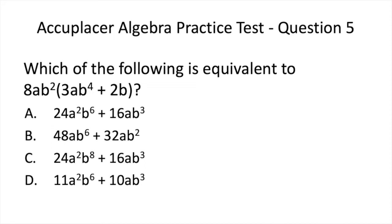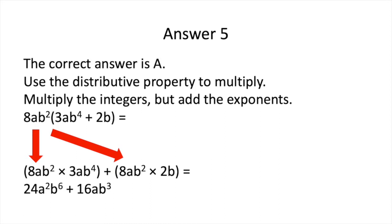Here is Question 5. Now pause to solve. The correct answer is A. Using the distributive property of multiplication, multiply the terms as shown below. When multiplying each of the two terms, you need to remember to multiply the integers but add the exponents. So for example, 8 times 3 is 24, and B to the power of 2 times B to the power of 4 equals B to the power of 6, since 2 plus 4 is equal to 6. So you can see the answer below.